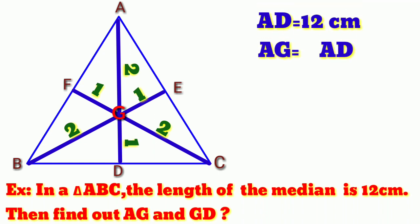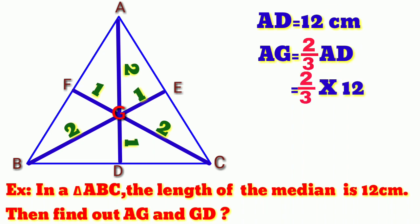And we know that AG is equal to 2/3 of AD. So 2/3 times 12 cm. If we simplify this, we will have 8. So AG is equal to 8 cm. And also,